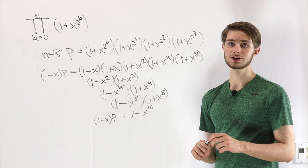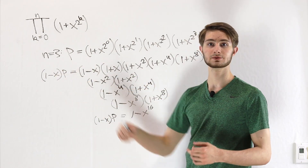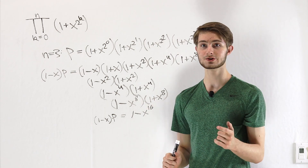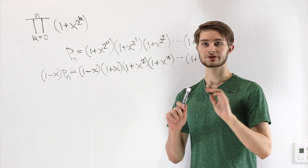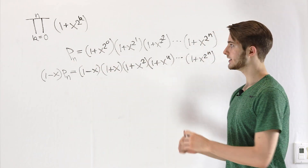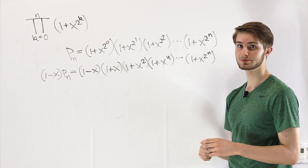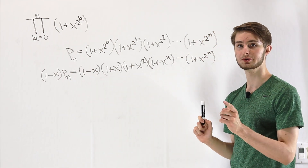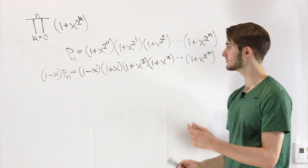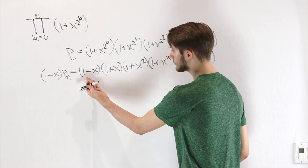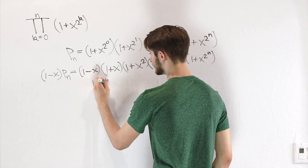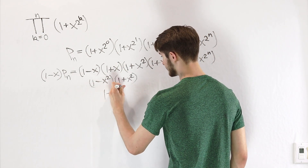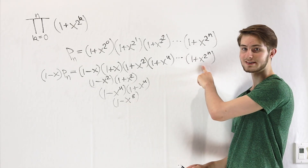This is a very nice simplification, but we want to do this for an arbitrary value of n so that we can take the limit as n approaches infinity to get our infinite product. I'm going to clear the board to give us some more space to look at the general case. I've rewritten our same product — this time p sub n — as the exact same thing except the number of factors goes all the way up to x to the 2 to the n. When we multiply that by (1 minus x), we'll see the same result as before, and we want to see what happens for an arbitrary value of n.